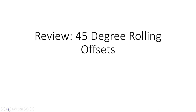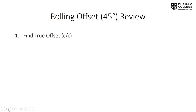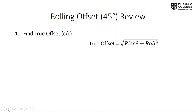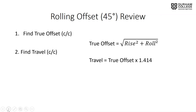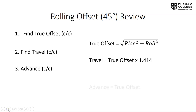This is a video review of 45-degree rolling offsets. First, we want to find our true offset center-to-center using the formula: true offset equals the square root of rise squared plus roll squared. Our travel center-to-center equals true offset times 1.414 — for 45-degree rolling offsets only. Our advanced center-to-center equals our true offset in a 45-degree rolling offset.